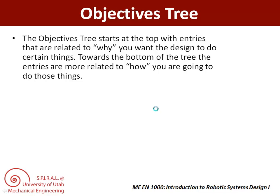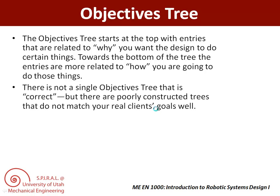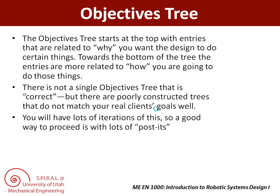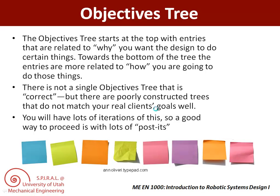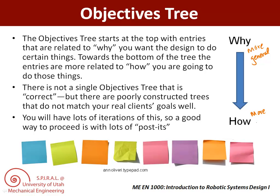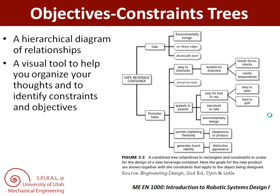After you generate a big list of objectives, you start at the top of the tree with entries that are related to why you want to do things, and put how you want to do them at the bottom. As you figure out how to best arrange your tree, there is often rearranging, so we suggest using post-its. That way you can put them all out on the board and start to figure out how to group them. Remember, whys go at the top and hows at the bottom — the whys are more general while your hows are getting more specific. Let's look at an example showing a good arrangement, with groupings that move from whys on the left to hows on the right, for a design of a safe beverage container. The constraints are in the ovals and the objectives are in the rectangles. You might want to hit pause to take a closer look.